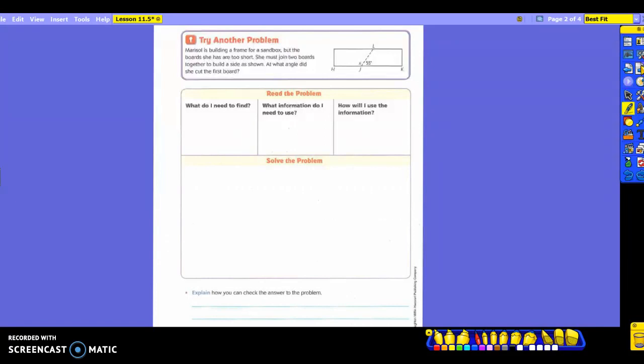Here's a different one. On this one, it says Marisol is building a frame for a sandbox, but the boards she has are too short. She must join two boards together to build a side, as shown. At what angle did she cut the first board? What's our question? At what angle did she cut the first board? Now is there any information in the actual problem we read to circle? So where are we looking to get some of the information we need? At the picture or the model.